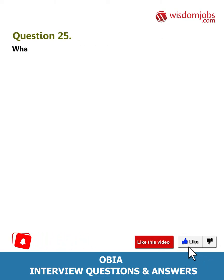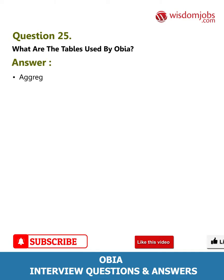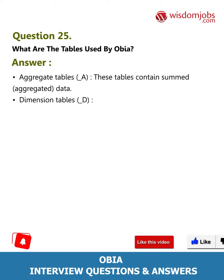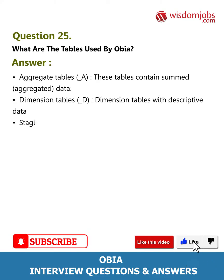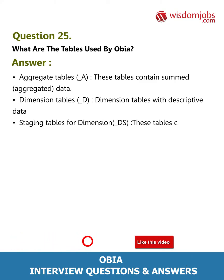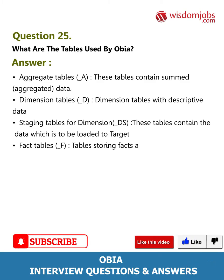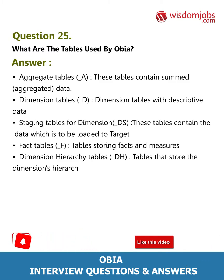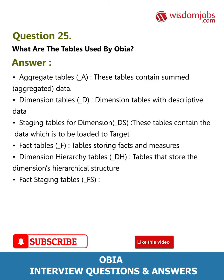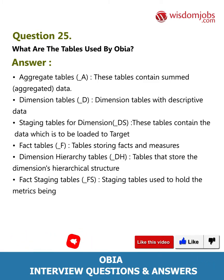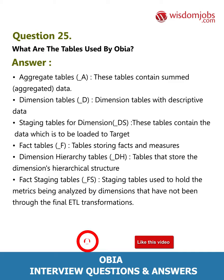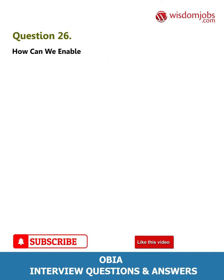Question 25: What are the tables used by OBIA? Answer: Aggregate tables (prefix _A) contain summed aggregated data. Dimension tables (prefix _D) contain descriptive data. Staging tables for dimensions (prefix _DS) hold data to be loaded to the target. Fact tables (prefix _F) store facts and measures. Dimension hierarchy tables (prefix _DH) store hierarchical structures. Fact staging tables (prefix _FS) hold metrics being analyzed by BI dimensions that have not completed final ETL transformations.